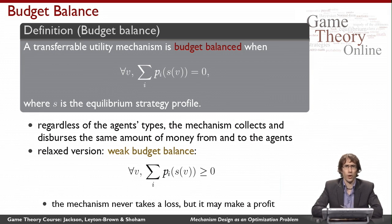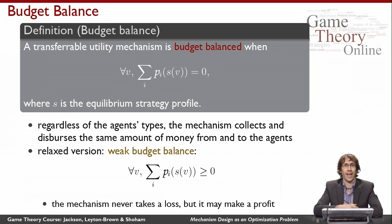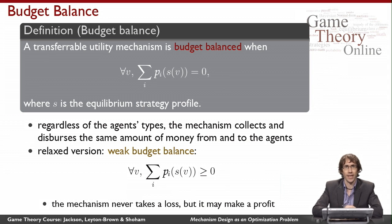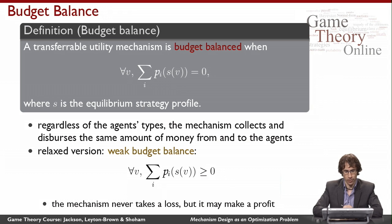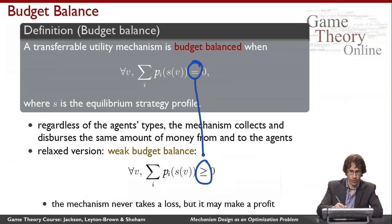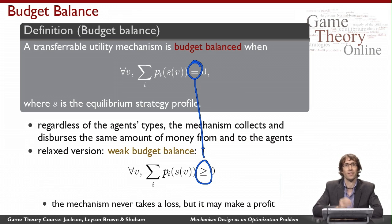You might wonder why I'd want the mechanism not to make any money. It might be that I really want money only to serve to get around impossibility theorems, and I just want the mechanism to make good decisions. On the other hand, I might be running a mechanism and be happy to make money but just concerned about ever losing money. In that case, I'd want a relaxed version called weak budget balance — the only difference is that I replace the equality with an inequality saying I ensure I never lose any money in equilibrium, but I'm quite happy to make a profit.